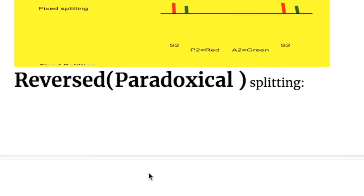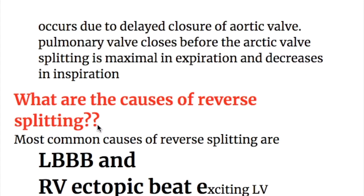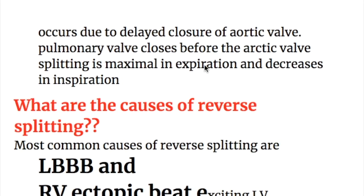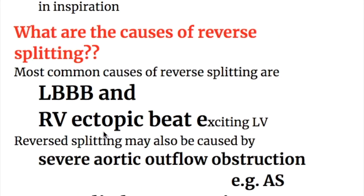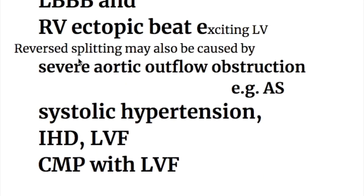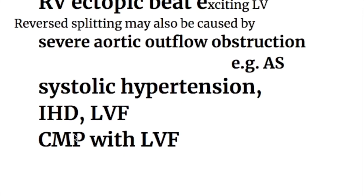Reversed or paradoxical splitting occurs due to delayed closure of the aortic valve — the pulmonary valve closes before the aortic valve. Splitting is maximal in expiration and decreases in inspiration. The most common cause is left bundle branch block, and also right ventricular ectopic beats that excite the left ventricle. Reversed splitting may also be caused by severe aortic outflow obstruction such as aortic stenosis, and by systolic hypertension, ischemic heart disease, left ventricular failure, and cardiomyopathy with LV failure.